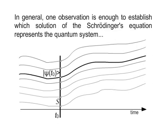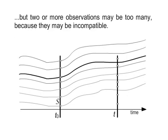In general, one observation is enough to establish which solution of the Schrödinger's equation represents the quantum system, but two or more observations may be too many because they may be incompatible.